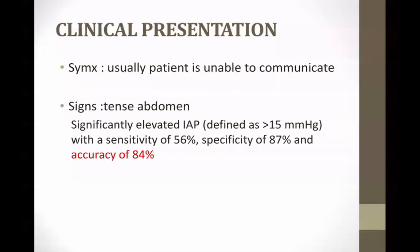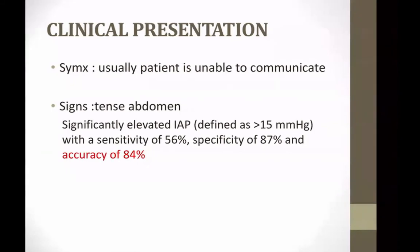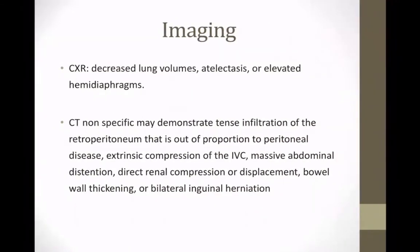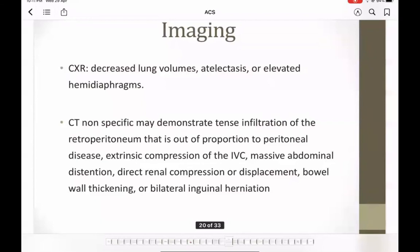The classical sign is a tense abdomen. However, its accuracy is only about 80% and its sensitivity is as low as 50%, so it should not be relied upon. Imaging is not used to diagnose abdominal compartment syndrome — it is done only to rule out other differential diagnoses. There are no specific findings for ACS on either X-ray or CT scan.